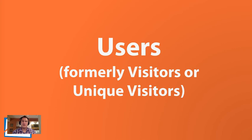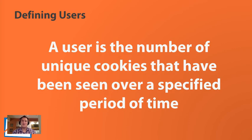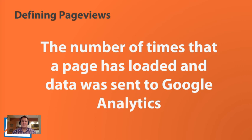Users — we used to call these visitors or unique visitors. Basically a user is the number of unique cookies that have been served over a specific period of time. If somebody came to your website five different times outside of that 30-minute window, they would have five sessions but would still be just one user. Users basically represent an aggregate of the number of unique computers or cookies we've seen on our website, though it can be inflated by cookie-clearing and mobile visits.